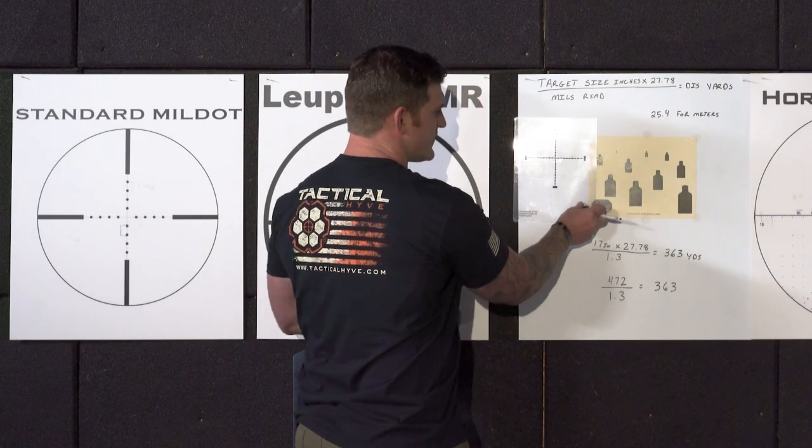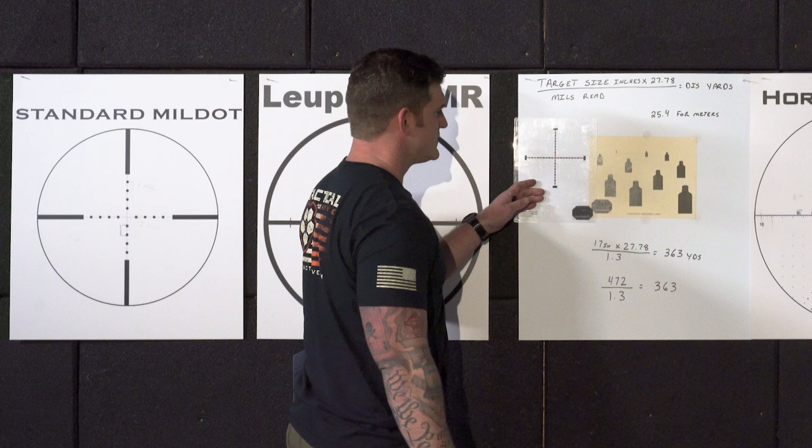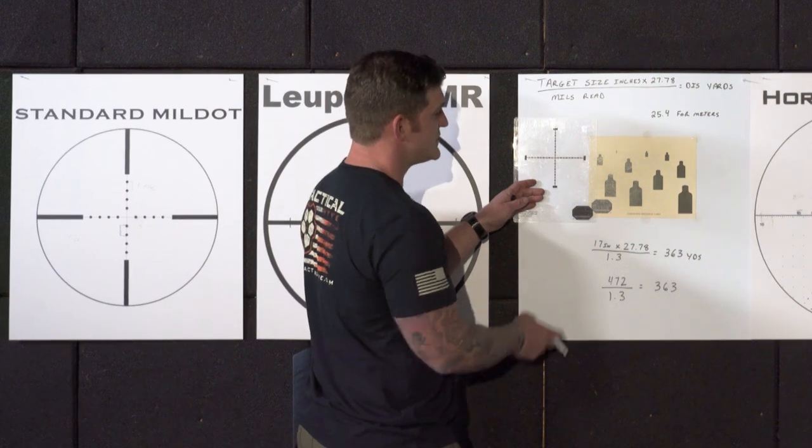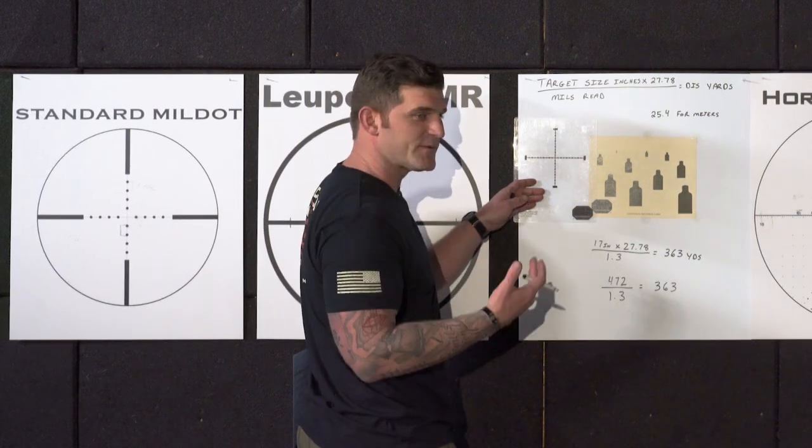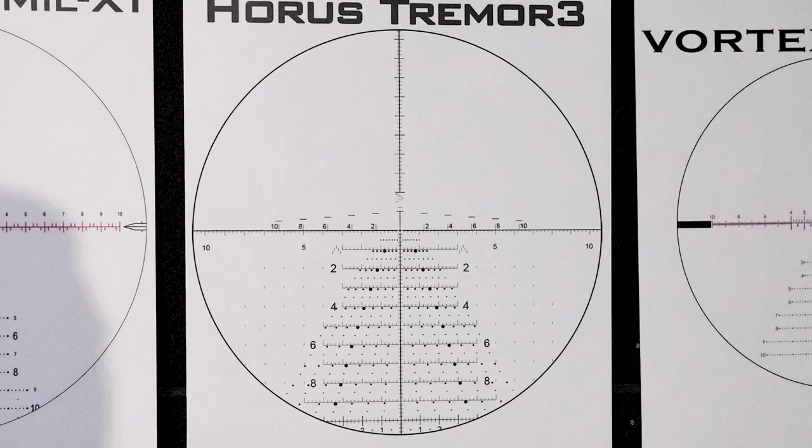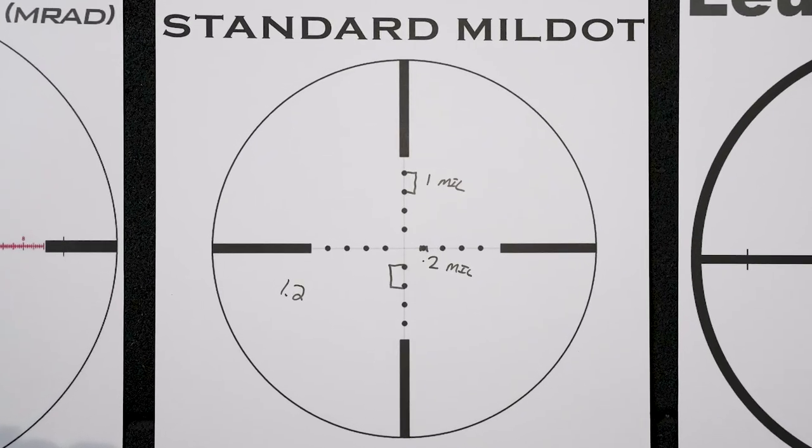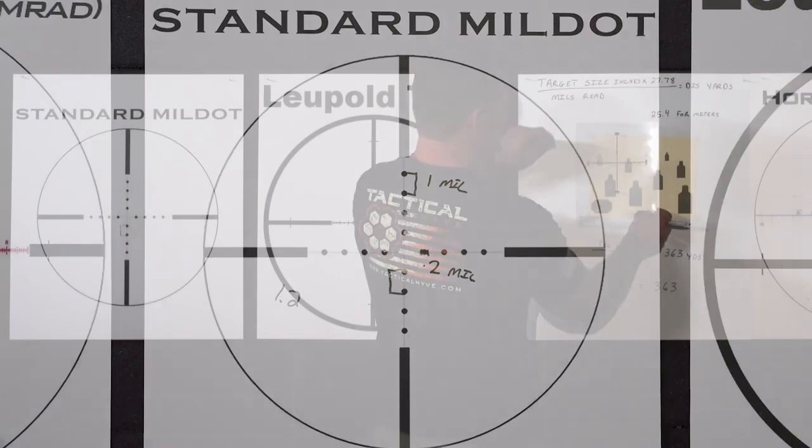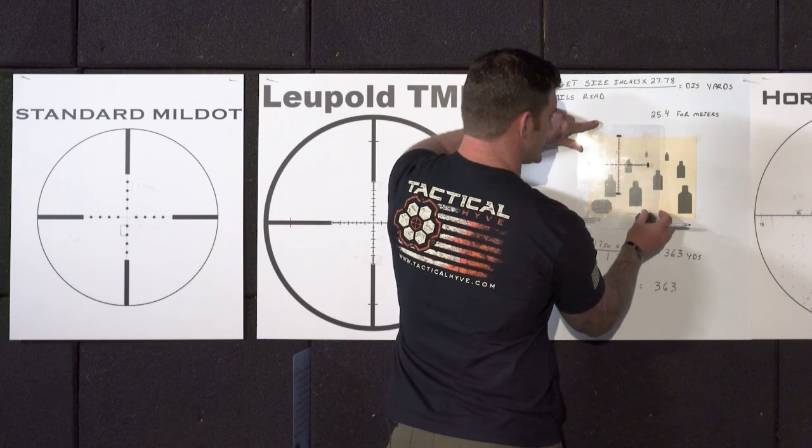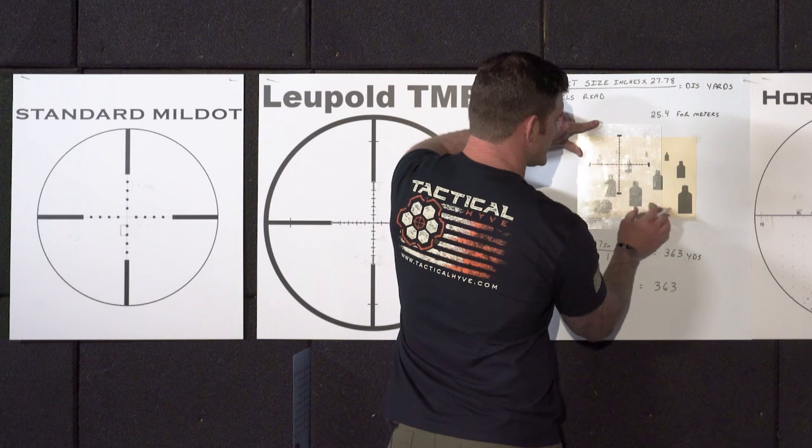All right, so now we're going to use the standard mil dot reticle to mill or measure some targets and use this for our range estimation. So you can kind of see the difference between a newer style reticle versus the old school reticle. This is just to show you it can be done with either, but those newer reticles are going to give you a little bit of an advantage whenever you're milling targets. So we'll go over to this target here now.